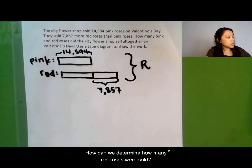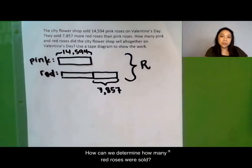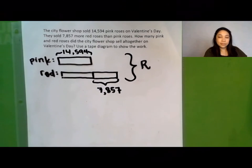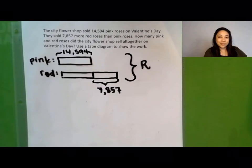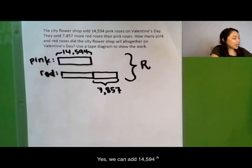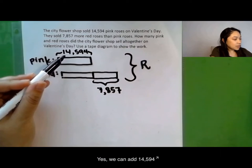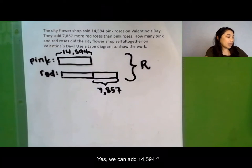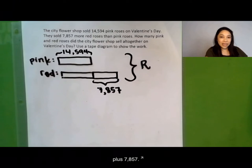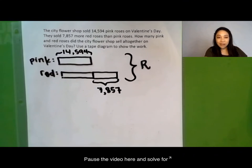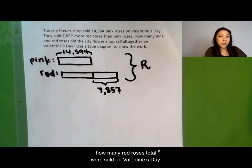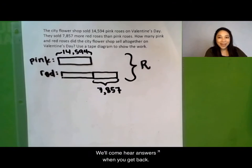With the variable r to represent all of the roses that were sold. How can we determine how many red roses were sold? We can add 14,594 plus 7,857. Pause the video here and solve for how many red roses total were sold on Valentine's Day. We'll compare answers when you get back.